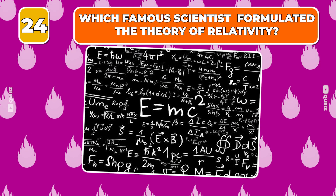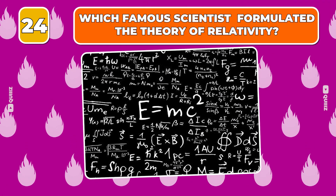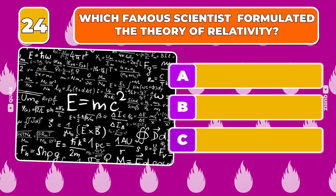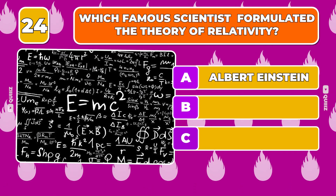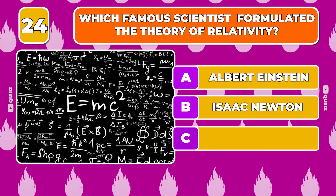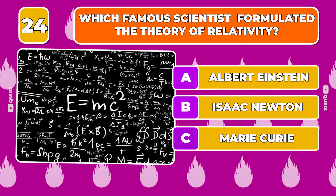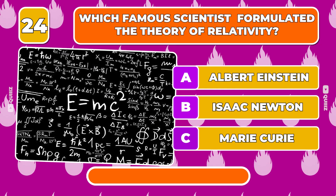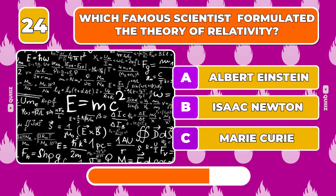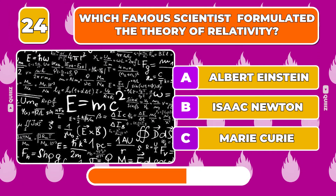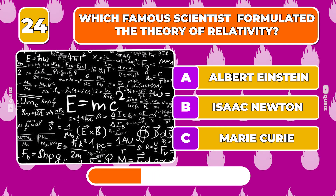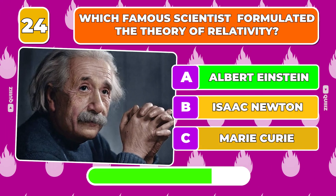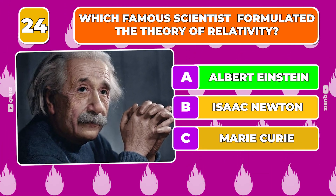Question 24. Which famous scientist formulated the theory of relativity? Albert Einstein, Isaac Newton, Marie Curie. The answer is Albert Einstein.